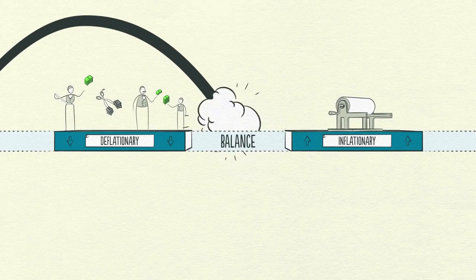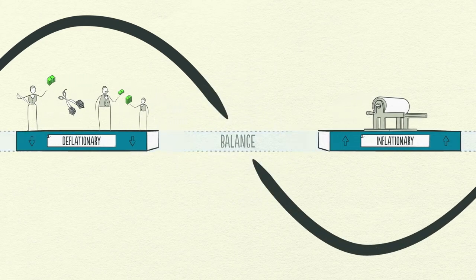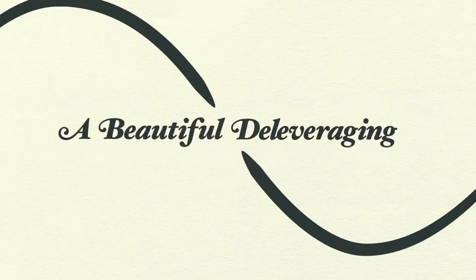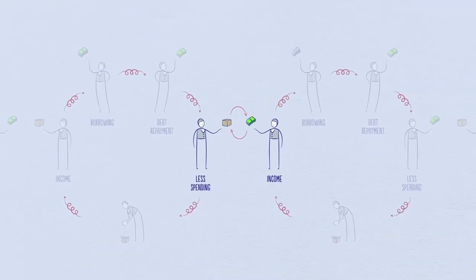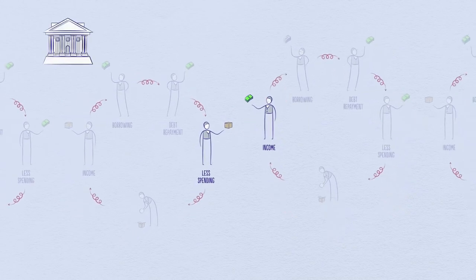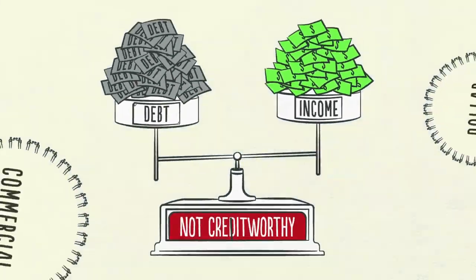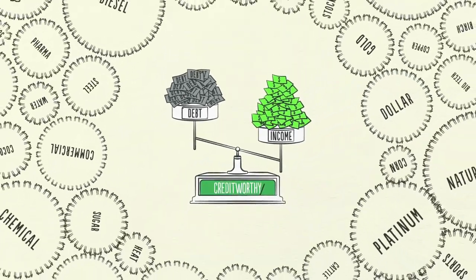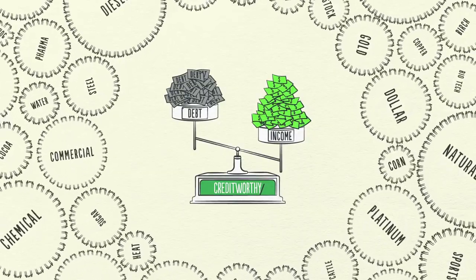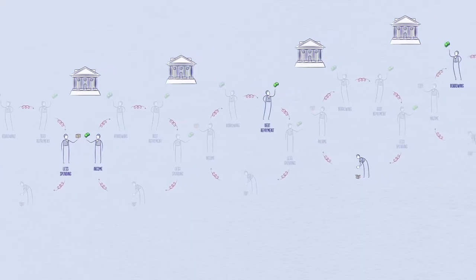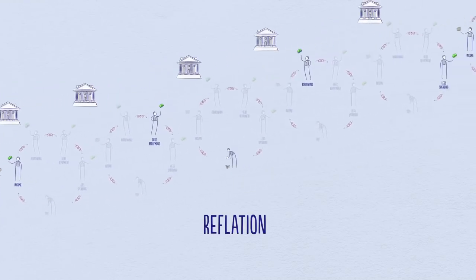If policymakers achieve the right balance, a deleveraging isn't so dramatic. Growth is slow, but debt burdens go down. That's a beautiful deleveraging. When incomes begin to rise, borrowers begin to appear more creditworthy. And when borrowers appear more creditworthy, lenders begin to lend money again. Debt burdens finally begin to fall. Able to borrow money, people can spend more. Eventually, the economy begins to grow again, leading to the reflation phase of the long-term debt cycle.